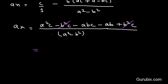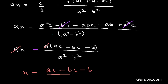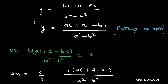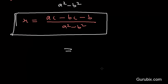Taking a common from the remaining three terms gives us a times (ac minus bc minus b) over (a-squared minus b-squared). The a in the numerator cancels with the a in ax, so x equals (ac minus bc minus b) over (a-squared minus b-squared). This is the value of x and y, which is the solution to the question. Thank you.